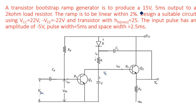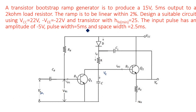Now we are going to design a suitable circuit for this transistor bootstrap time base generator. A transistor bootstrap ramp generator is to produce 15 volts output over 5 milliseconds into a 2 kilo ohm load resistor. The ramp is to be linear within 2%. The supply voltages are VCC equal to 22 volts and -V equal to -22 volts. The transistor has HFE minimum (beta) of 25. The input pulse has an amplitude of -5 volts, pulse width of 5 milliseconds, and space width of 2.5 milliseconds.